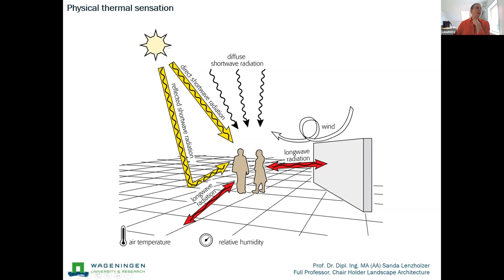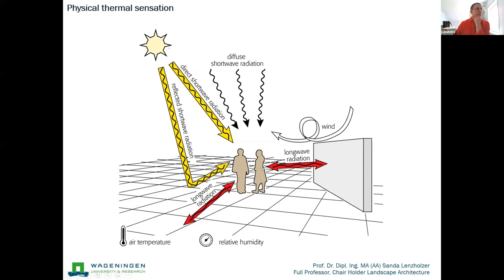All the solar energy that gets into the urban system — into the pavements, the walls, etc. — is partly stored and then emitted as longwave radiation. Many of you know it: when you stand in front of a wall in the evening that has been exposed to the sun all day, it still emits a lot of warmth. This is a very important process to understand the occurrence of the urban heat island — it really matters what kind of materials we use and how much shade we provide in the city.